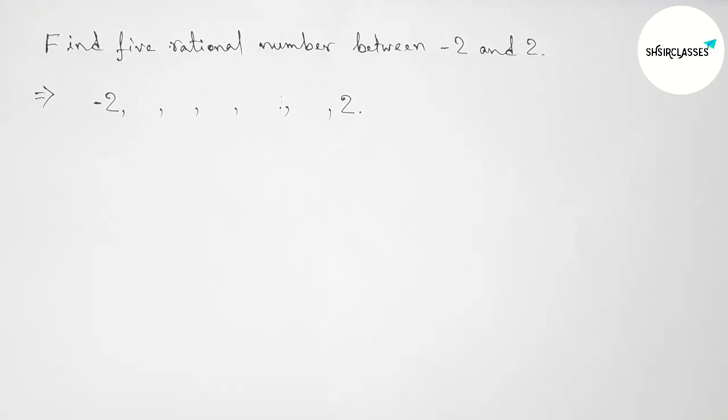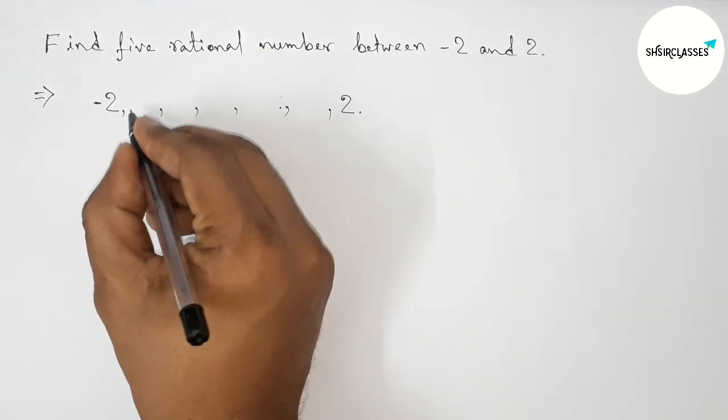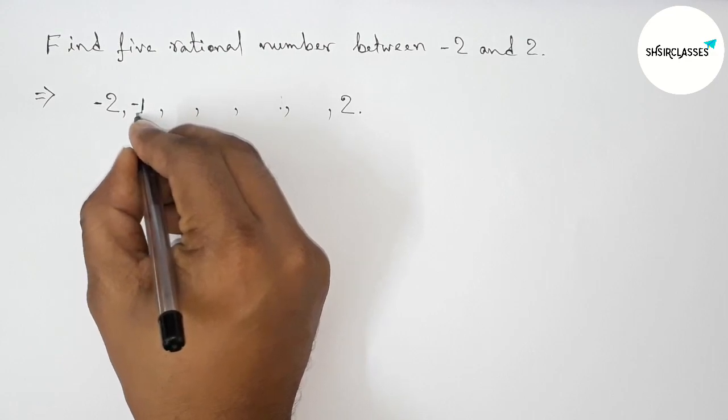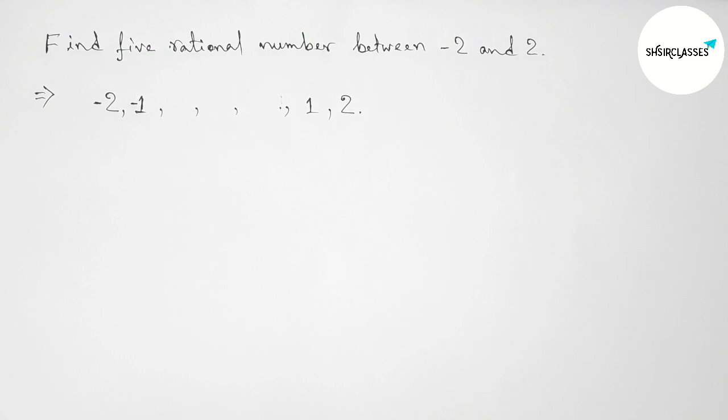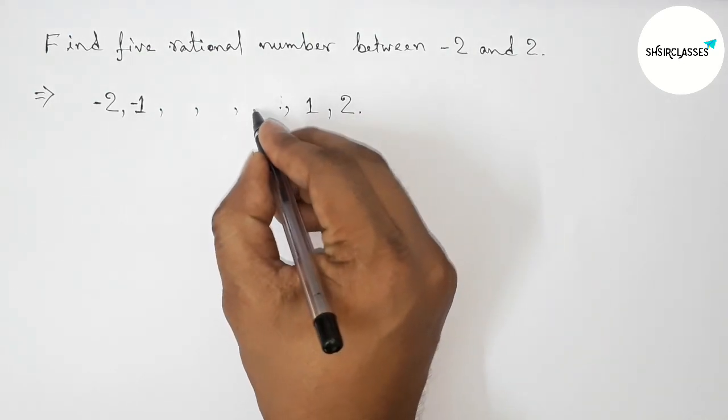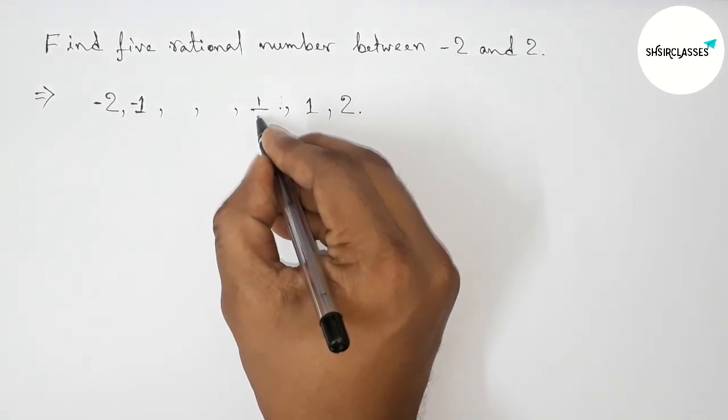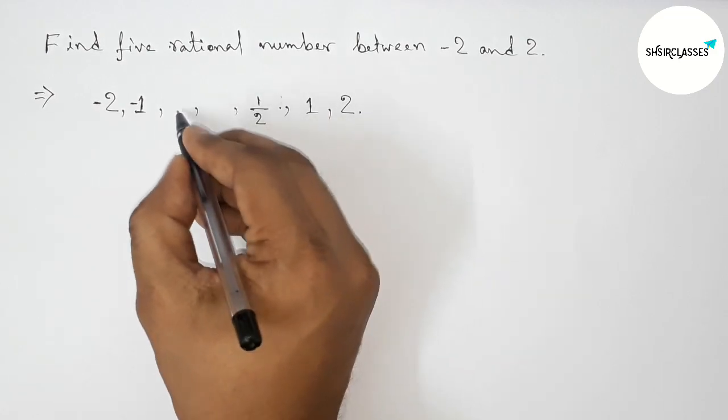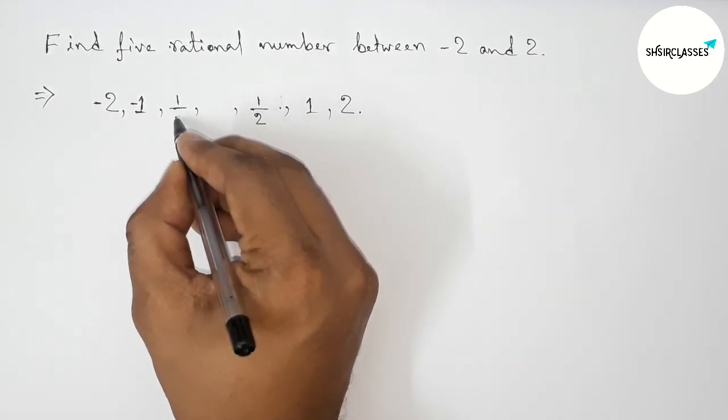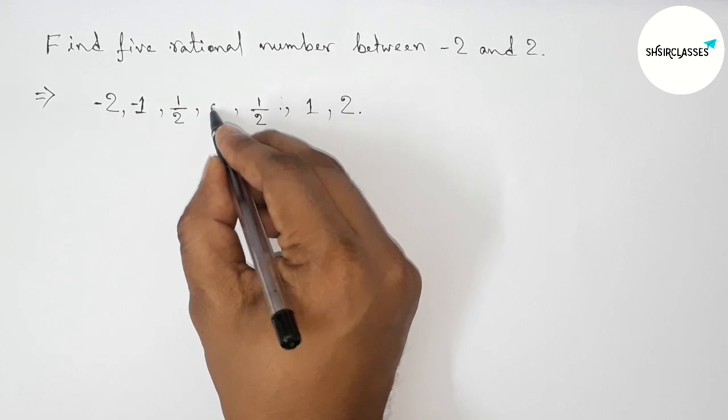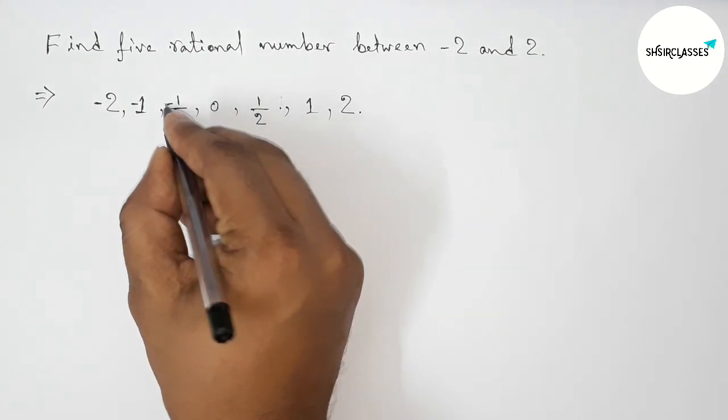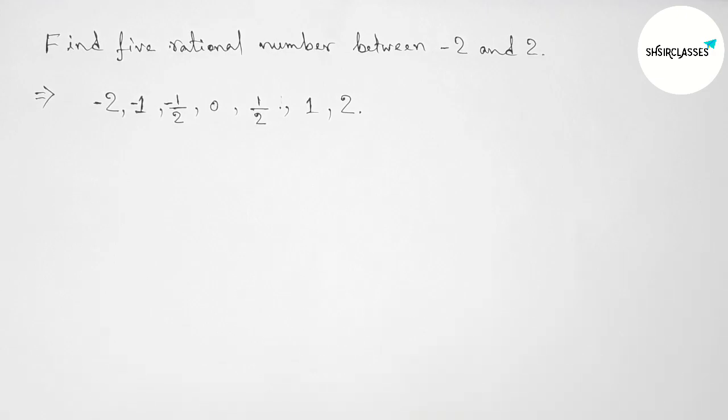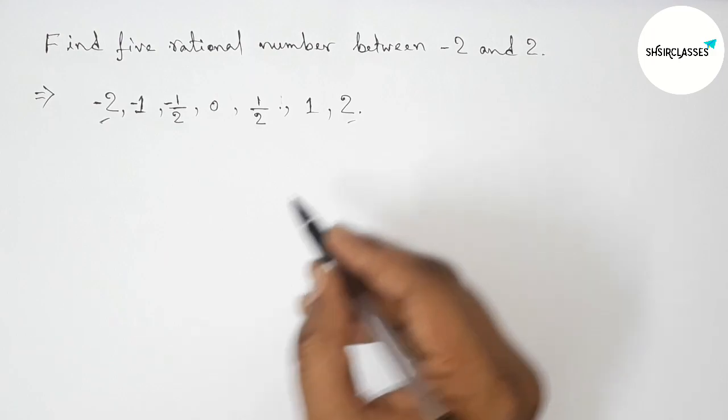Now first of all, taking here two rational numbers: minus 1 and plus 1. You can take another, but here taking this. Also taking here 1/2, and here minus 1/2, and here 0 because 0 is a rational number. So you can get many other rational numbers.